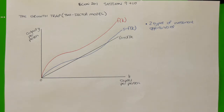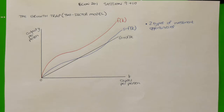This video is from sessions 9 and 10, and it specifically looks at the growth trap, a two-sector model. I will do a separate video for the poverty trap, which is where we assume that population growth is endogenous with respect to income. For now, the growth trap is also known as a two-sector model, and it essentially combines elements of both neoclassical growth theory as well as endogenous growth theory.